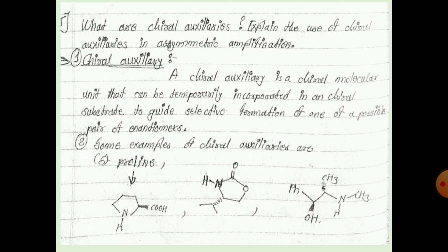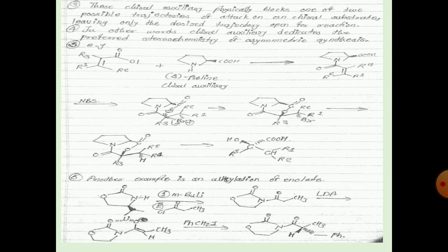The chiral auxiliary physically blocks one of the two possible trajectories of attack on the chiral substrate, leaving only the desired trajectory open for the reaction. In other words, the chiral auxiliary dictates the preferred stereochemistry of the asymmetric synthesis.